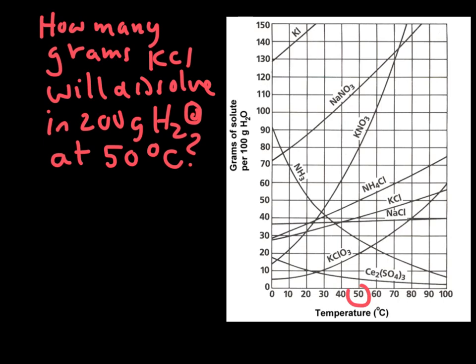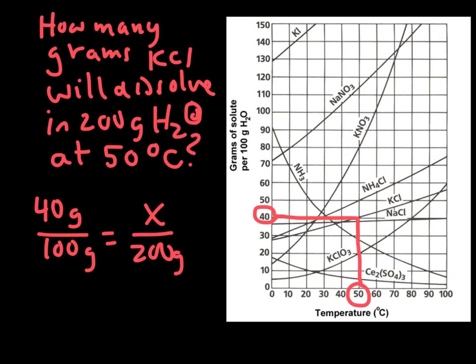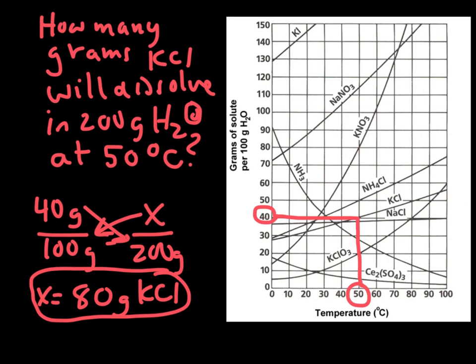To solve this problem, please make sure you copy this down. We go to 50 degrees C, we go up until we find potassium chloride, we go over and we read it to be 40 grams. But that's 40 grams per 100 grams of water. And if we have 200 grams of water, we need X. Now, there's one of two ways to do this. Cross multiply and divide, and you'll get 80 grams KCl. Or you can see that it simply doubles from 100 to 200, so you automatically double the 40 to 80. That's another thing we can do with the solubility curve.